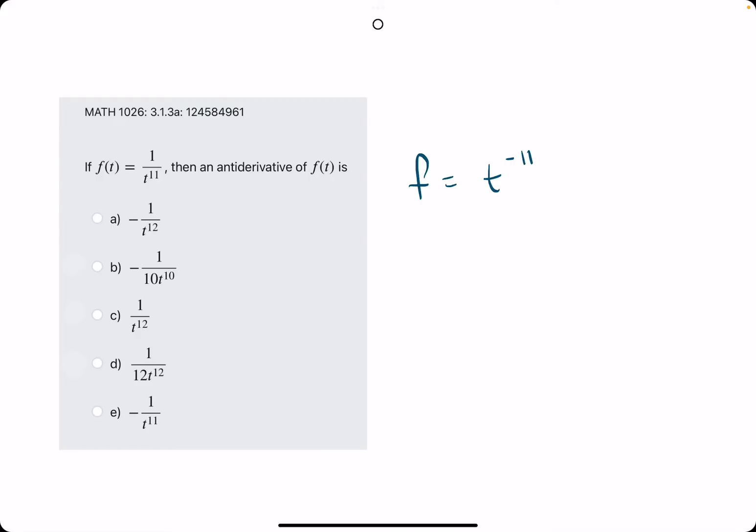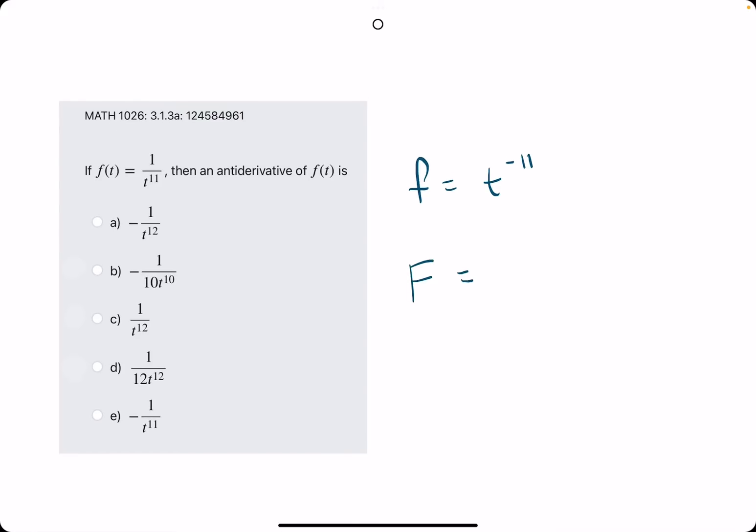We, again, want to rewrite it with negative exponents, bringing that t term up. Now, to find the anti-derivative, we add 1 to the exponent to get negative 10. Then we divide by that negative 10.